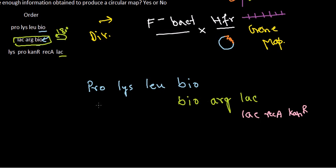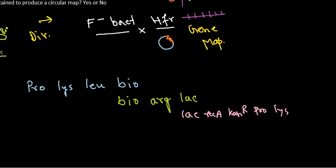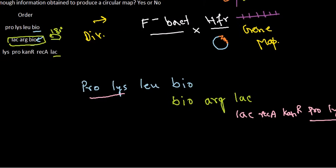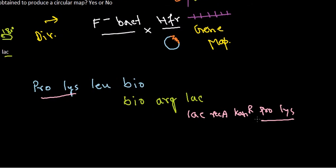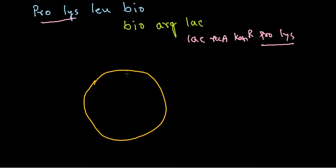After the 180-degree rotation of HFR3, we get proline and lysine at the terminal end of that sequence. Looking at the overall map, proline and lysine are already placed from HFR1, so the terminal part of HFR3 overlaps with proline and lysine in both directions — confirming that the DNA is circular. The terminal overlapping region with proline and lysine closes the circle.